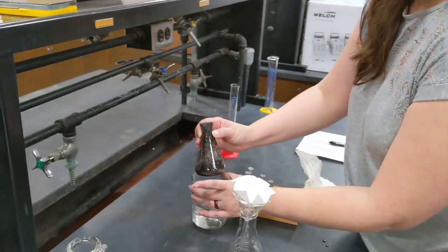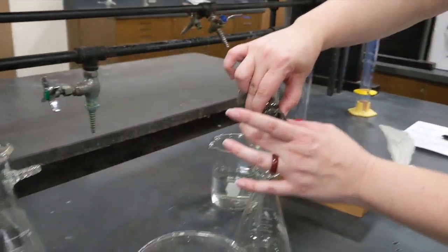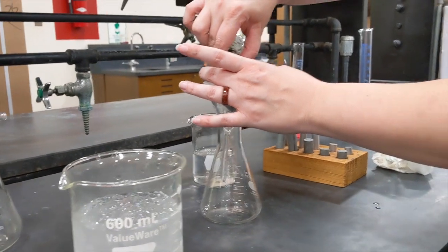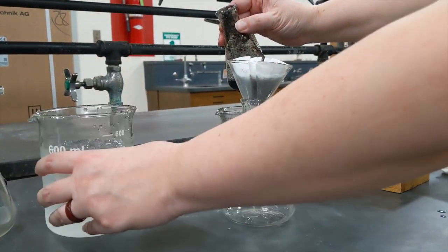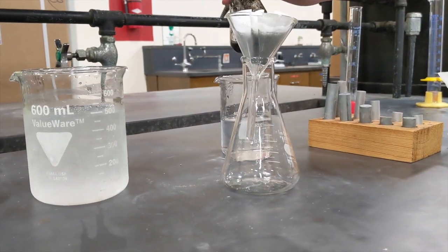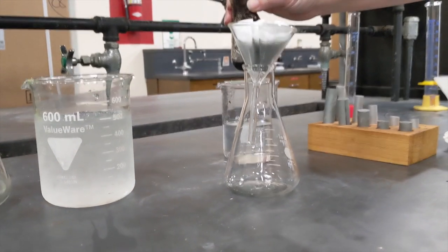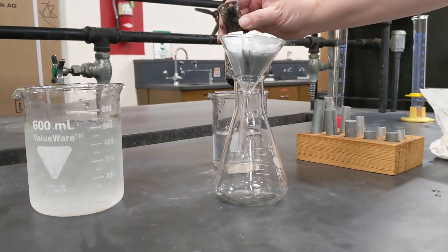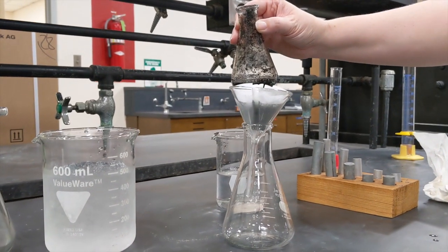So the first thing I'm going to do is gravity filter this. Gravity filtration means what it sounds like it means, using gravity to pull the solution through the filter paper. The thing that I want here is in the liquid. I'm getting rid of the impurities that are the solid dissolved in it.